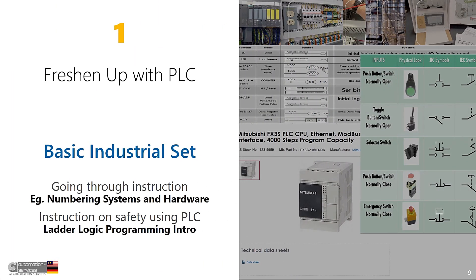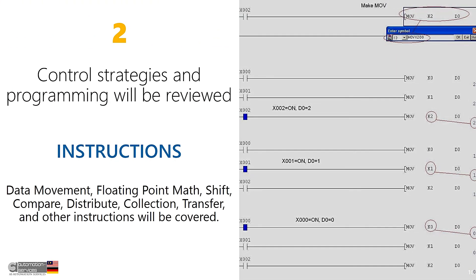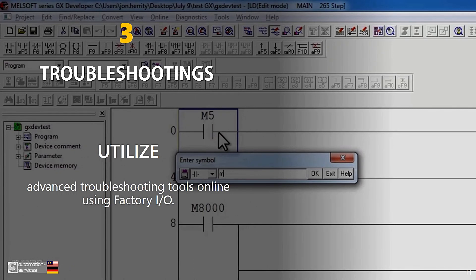To summarize the course: the first thing is to freshen up on PLC basics — covering industrial setup, examples like numbering systems, hardware instruction, safety using PLC, and ladder logic programming in control. Control strategies and programming will be reviewed in detail, including data movement, pointer, comparison, shift, compile, distribute, collection, transfer, and other instructions. Troubleshooting tools will also be covered.